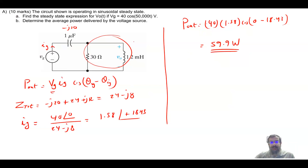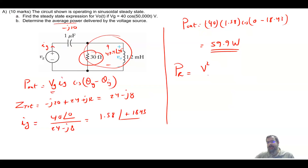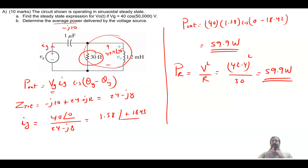There is also a shortcut. Real or average power can only be consumed by the resistance; the inductance and capacitance consume zero average power — only reactive power. So the power consumed by the resistance equals the power produced by the source. P_R equals V squared divided by R, where V is the voltage across the resistance: 42.4 squared divided by 30, which also gives 59.91 watts. This confirms the result from both the source and load perspectives.